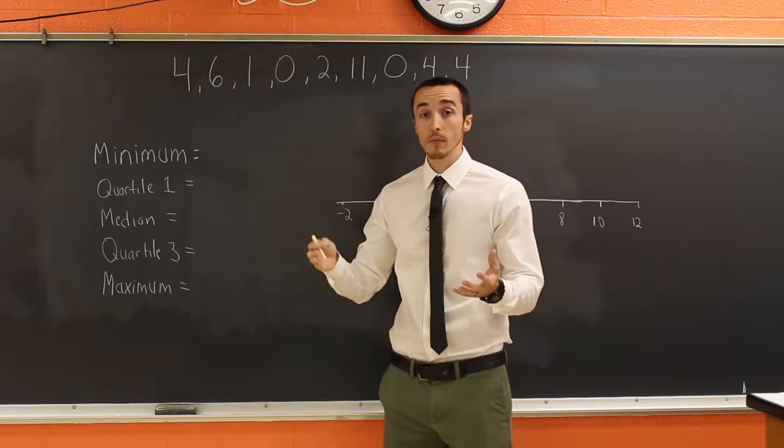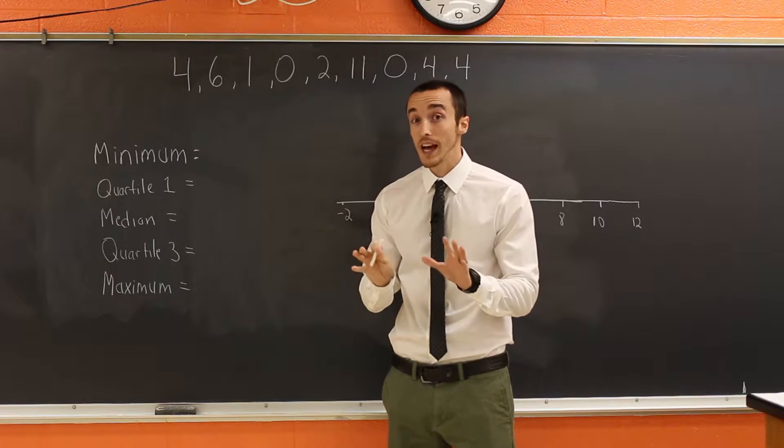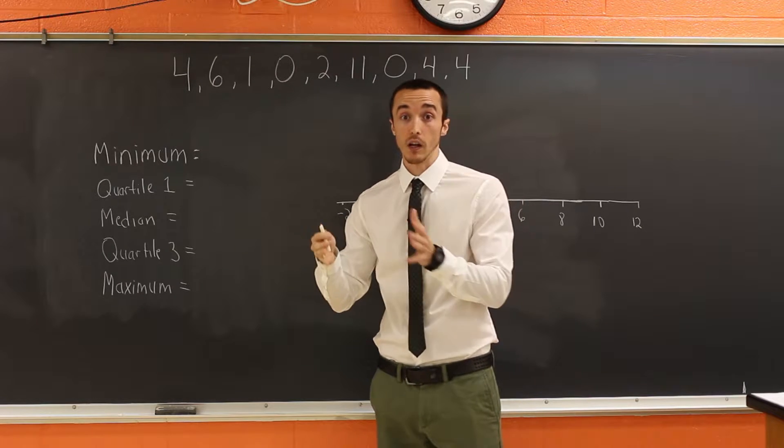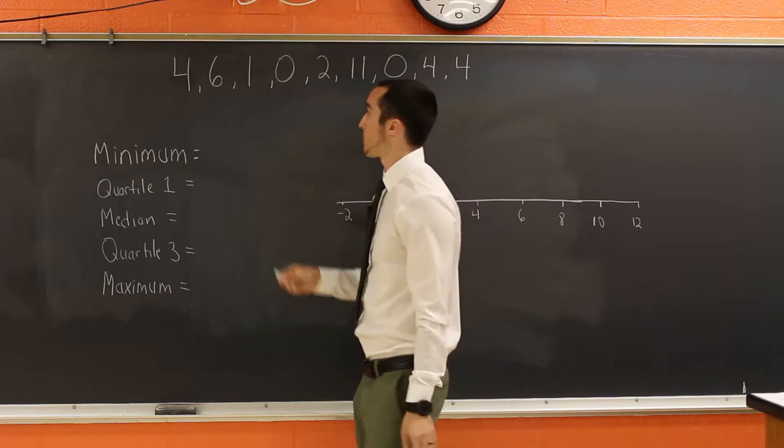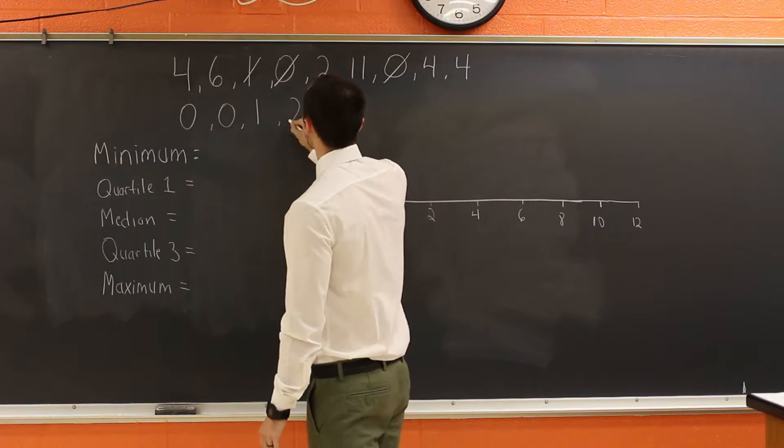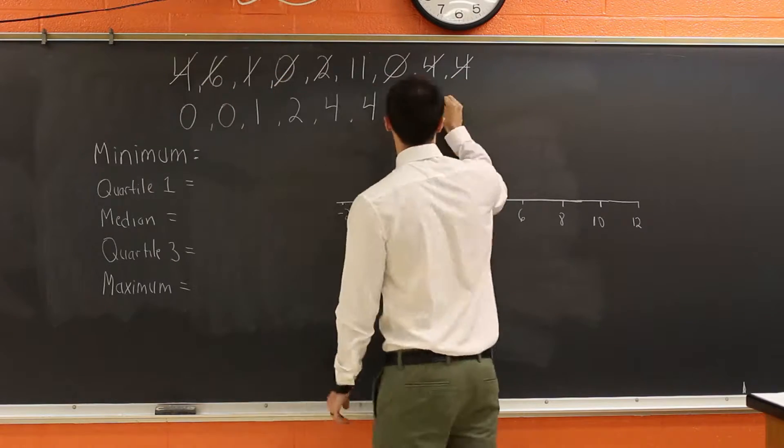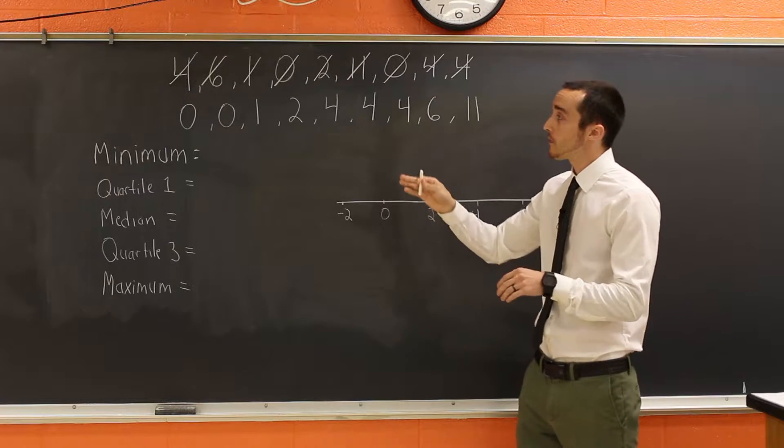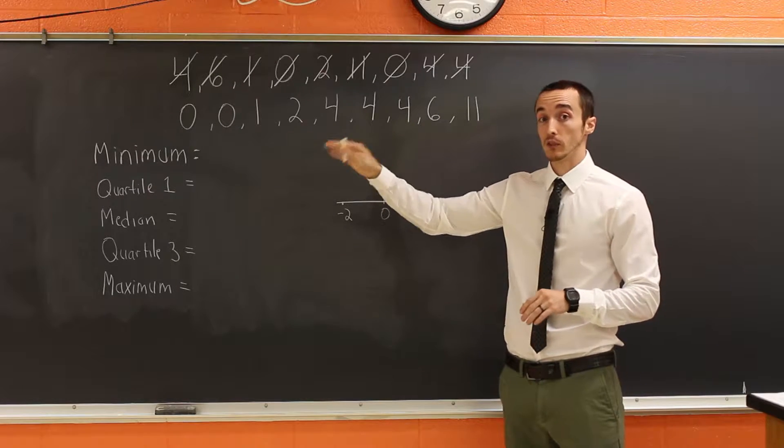So here's how we make a box and whisker plot. The first step is to rearrange the numbers in numerical order, in other words, from smallest to biggest. So let's do that right now. Now that we have the numbers in order from smallest to biggest, the next step is to find out your five important values.